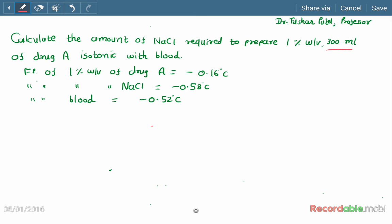And the isotonicity is adjusted by using sodium chloride as an adjusting substance. Now we will use the formula: x equals 0.52 minus a divided by b. Here, x is the amount of sodium chloride in grams per hundred ml. A is the freezing point of the drug solution, and b is the freezing point of one percent of the adjusting substance. Here it is the sodium chloride. Okay, now let us put the values.